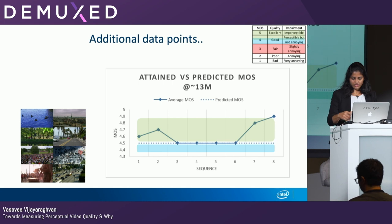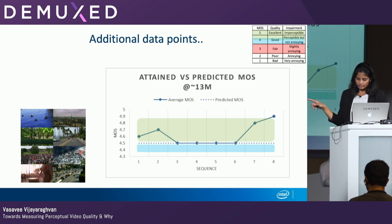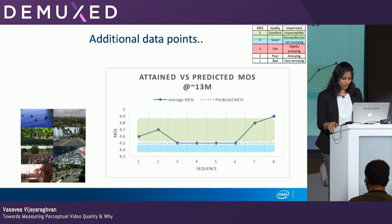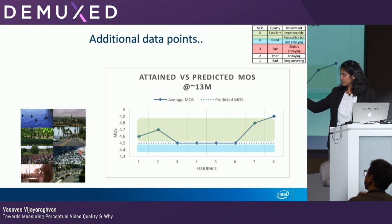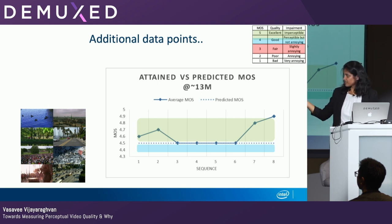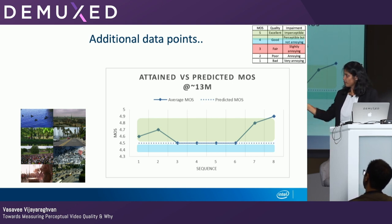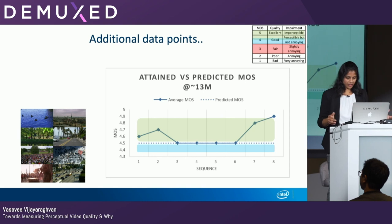This graph provides an additional data point with more 4K content of the same content type shown before. The dotted line indicates that 4.5 is the MOS score we can definitely hit using 13 megabits per second with this specific encoder and content type. Encoding every other video at 13 megabits per second in the solid lines, the theory worked out — every video produced a MOS score of 4.5 or more at the bitrate identified as ideal for this particular case.